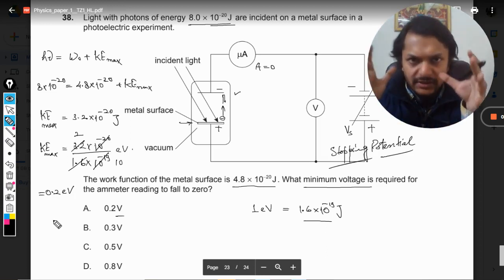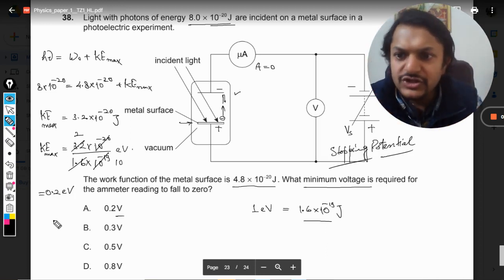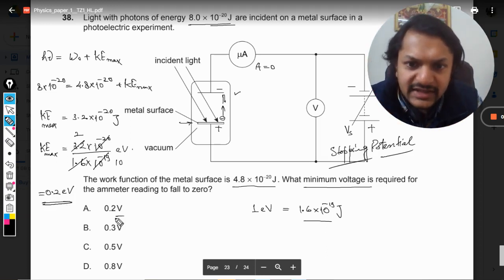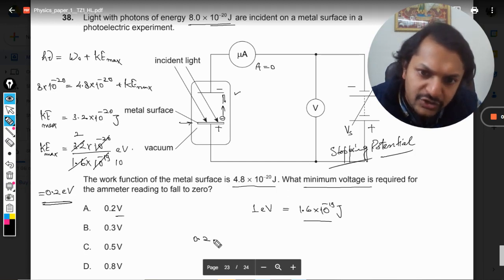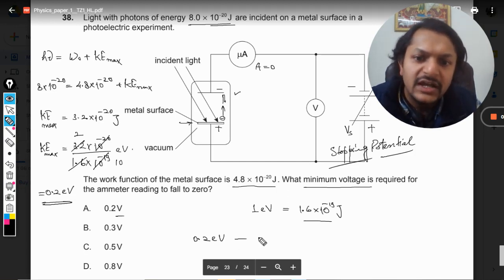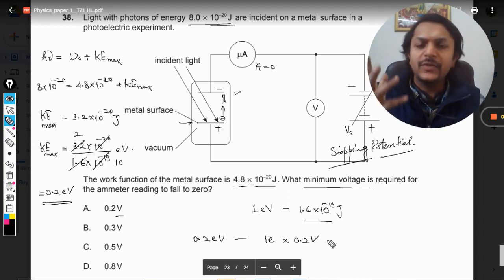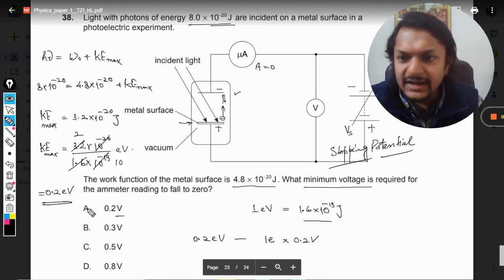And what does this mean? This means now 0.2 electron volts. It means that to stop one electron you need 0.2 volts of the potential difference, and that is why our answer is going to be A.